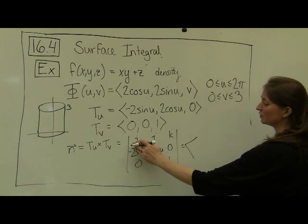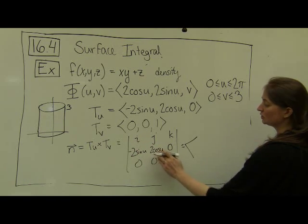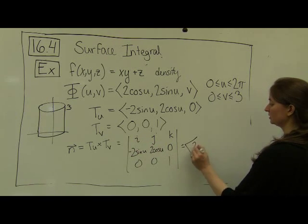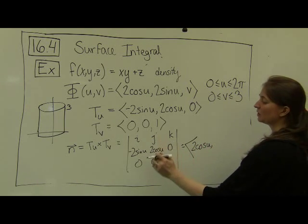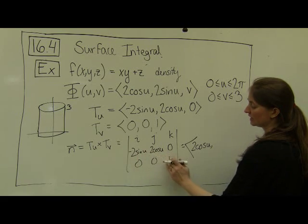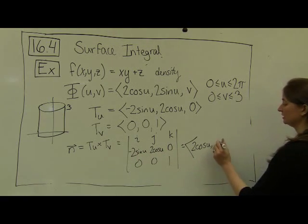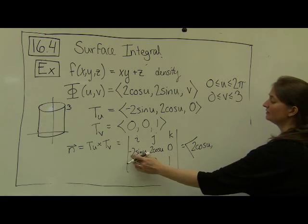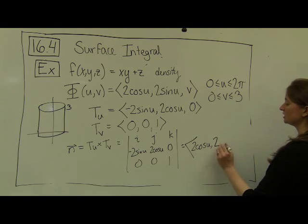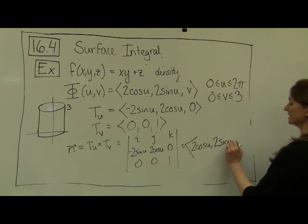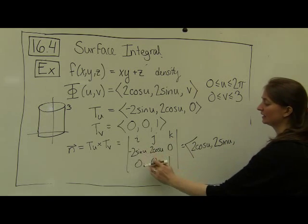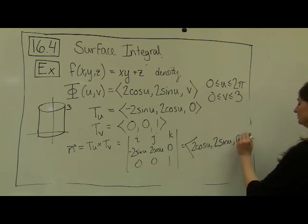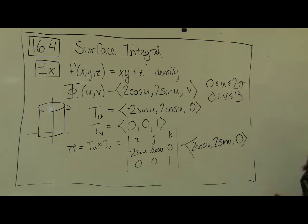So my first component, my i-th component, is 2 cosine u minus 0, which is just 2 cosine u. But then my j-th component should be the negative of 2 sine u minus 0. Or the negative of negative 2 sine u, so I should just get out 2 sine u. This was the error that I made previously. And then k, the component is just 0. So now I've rectified that error.